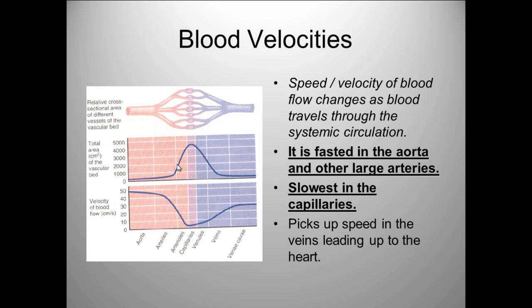There is a relationship between the total surface area of a specific type of blood vessel and the velocity. Generally speaking, the lower the total area of the blood vessel, the higher the velocity. As the total area increases, the velocity slows down.